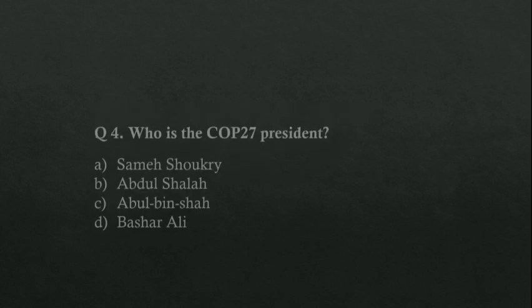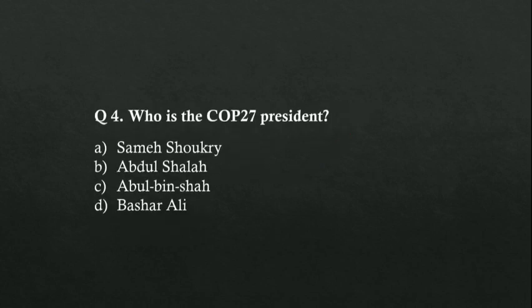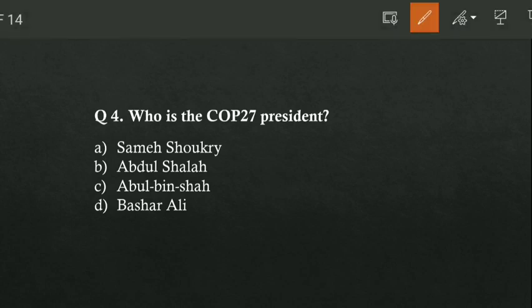Who was the COP 27 president? Option A is Sameh Shaukri, option B is Abdul Salah, option C is Abul Bin Shah, option D is Bashar Ali. Option A is correct — Sameh Shaukri.